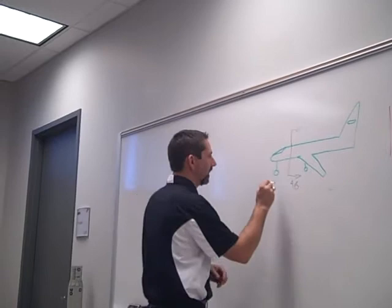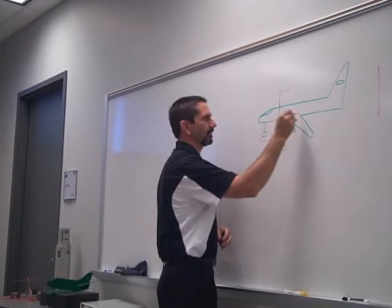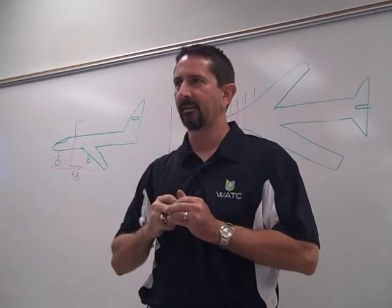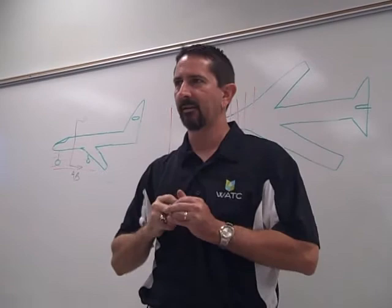The next way that we divide an aircraft is from bottom to top. What are those called? Water lines. Water lines start on the ground or below the ground, depending on the drawing, but they'll always be at the bottom of the plane working up.